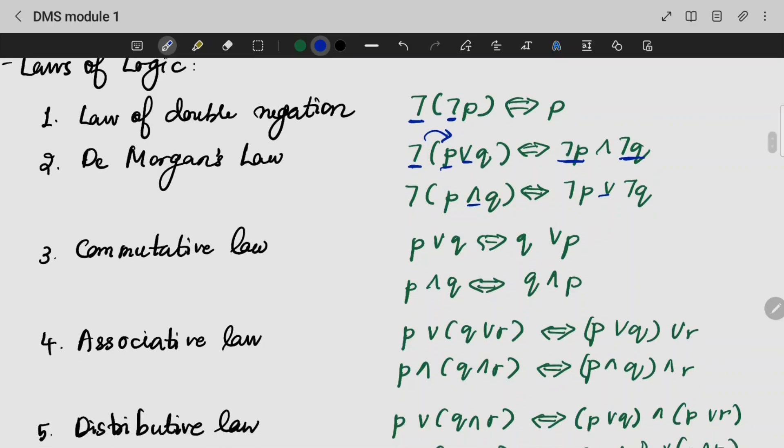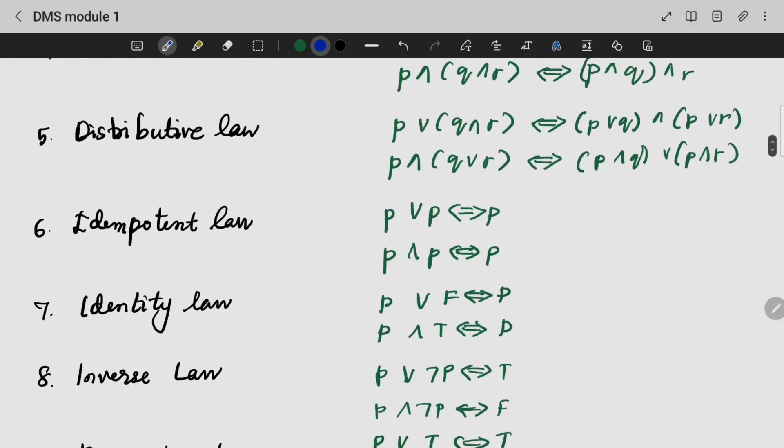Commutative, associativity, distributive, idempotent. If the same values are given for P and P, you will get the same P.